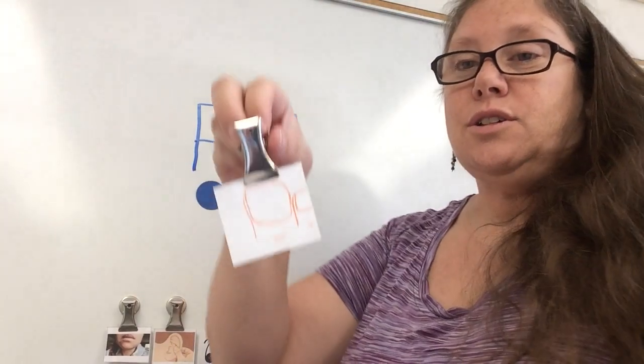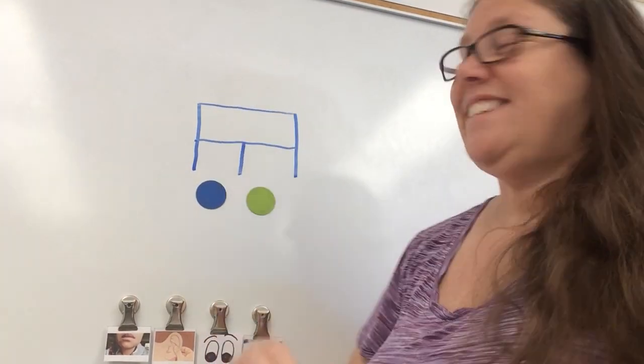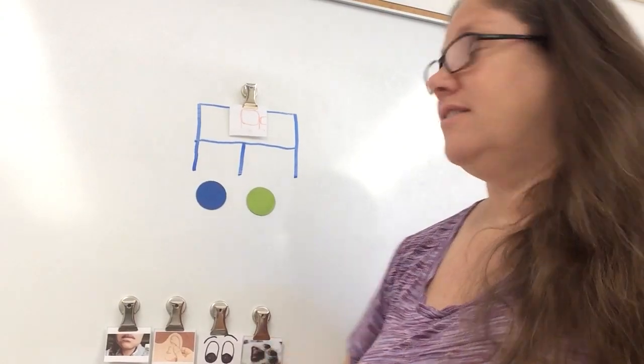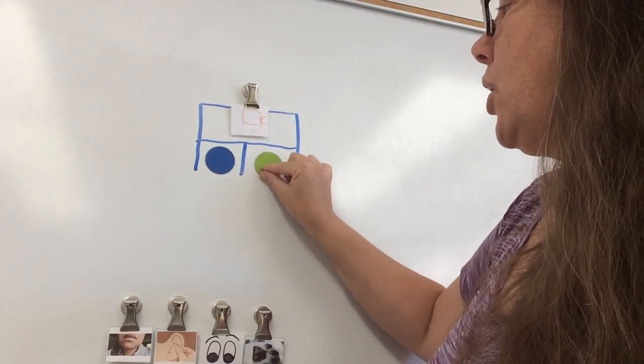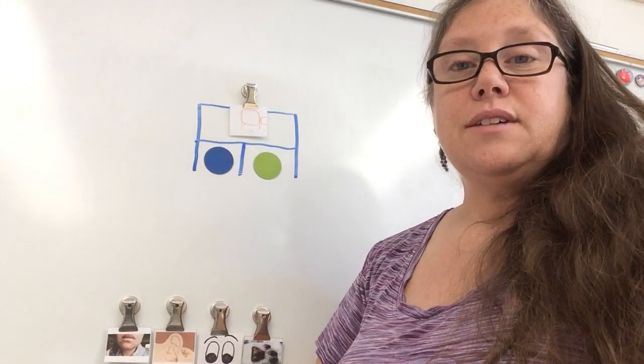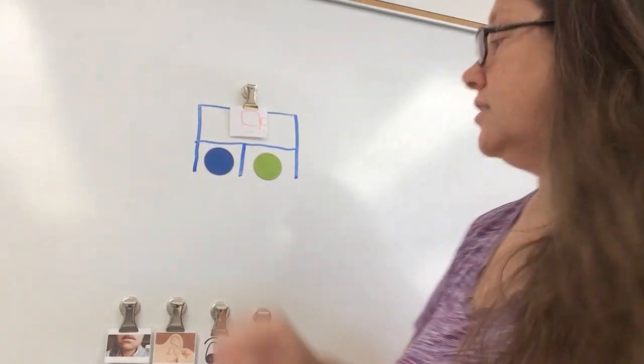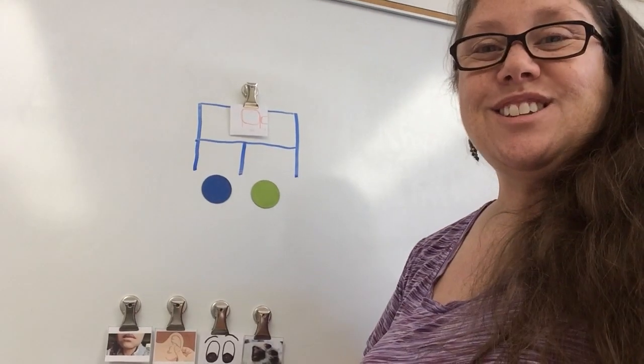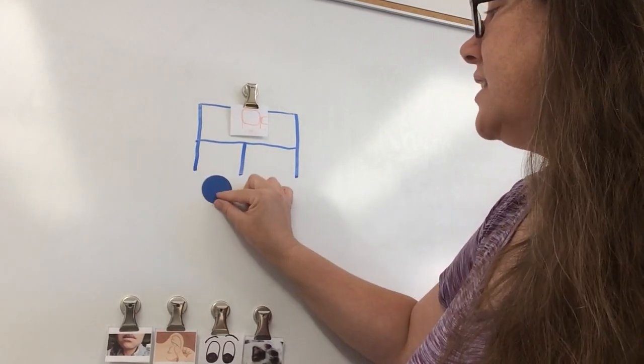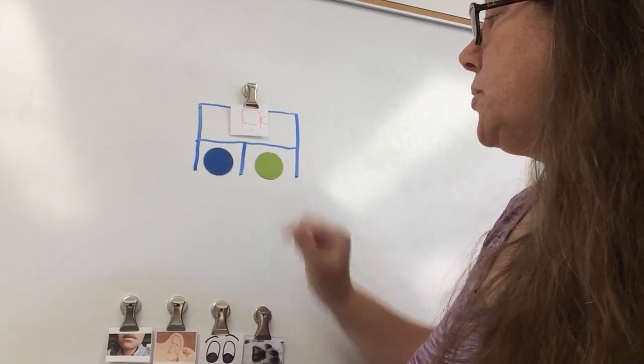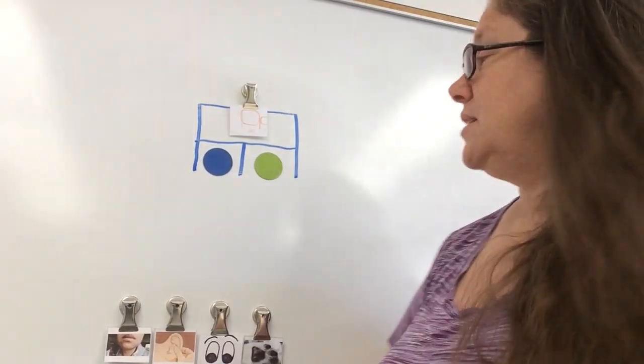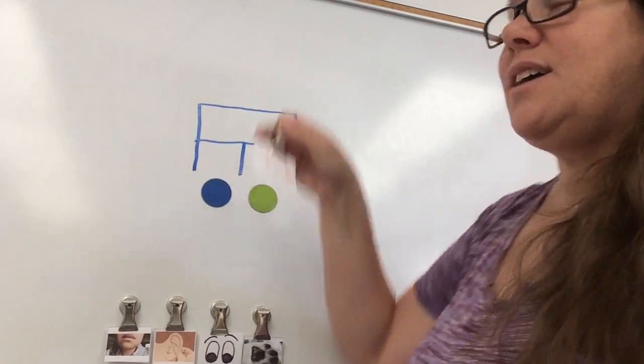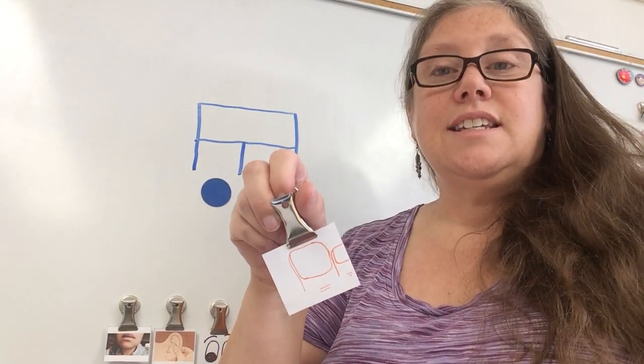Now we'll do toe. Okay, we'll do them together. T-O. Now you do the sounds by yourself while I pull. Let's do the sounds together again. T-O. Now you do them. The sounds in toe are T-O.